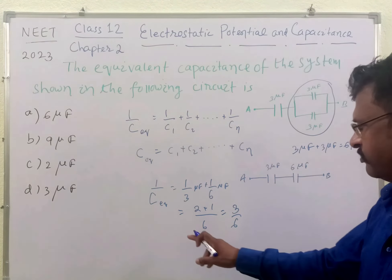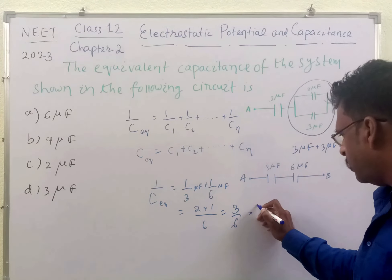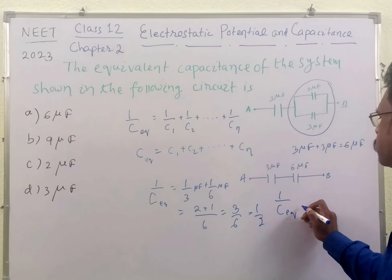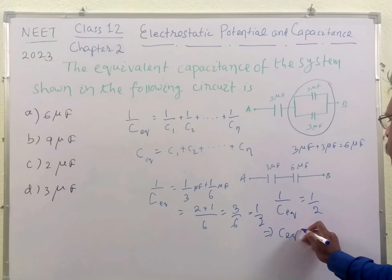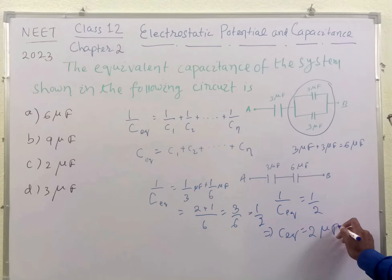So this will be 1 by C equivalent is equal to 1 by 2. This implies C equivalent is equal to 2 micro Farad, students.